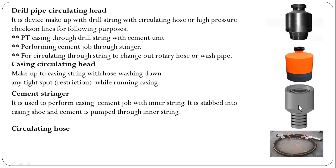Cement stringer. It is used to perform a casing cement job with an inner string — it is stabbed into the casing shoe and cement is pumped through the inner string. The stringer has three or four O-ring seals, and it is strapped into the casing shoe so we can pump the cement through the string to perform the cement job, especially for large casing like 18⅝-inch or 24-inch conductor.